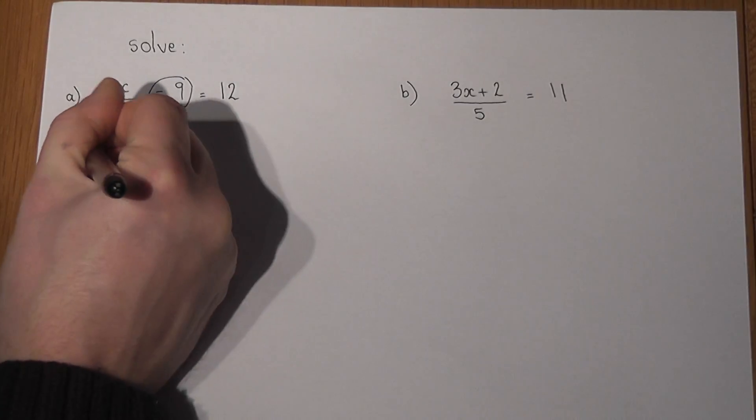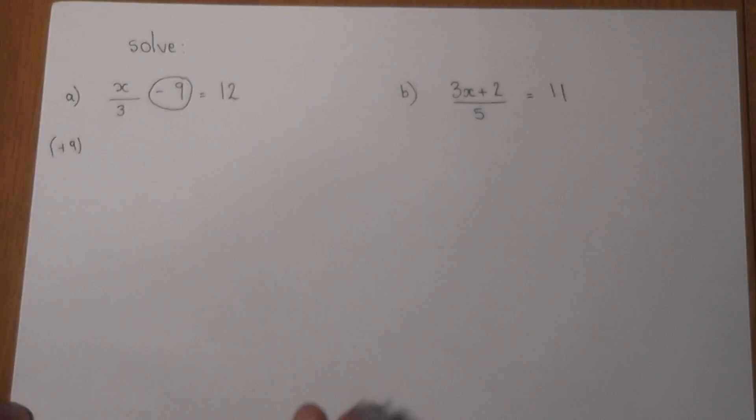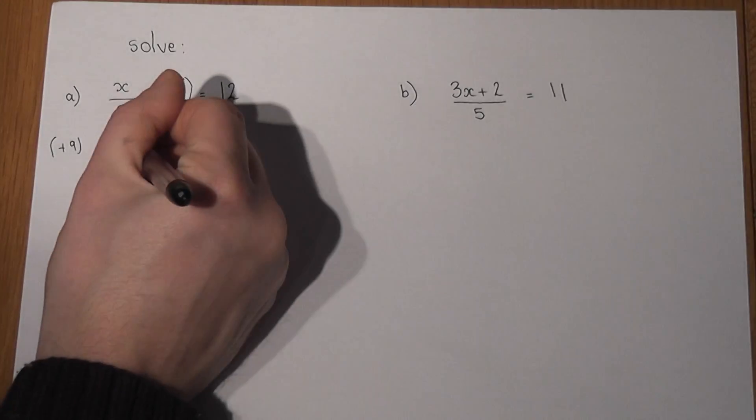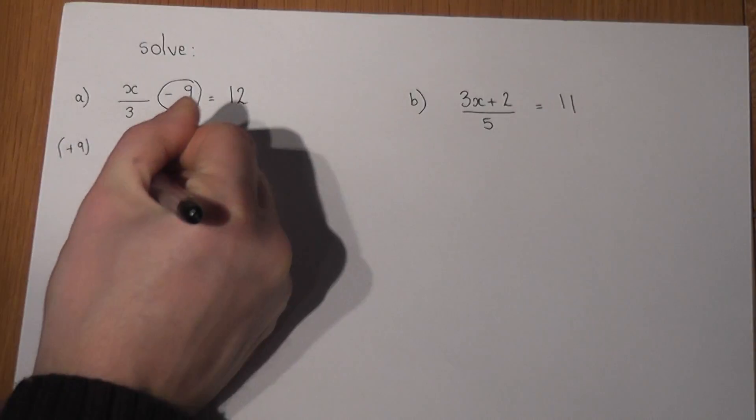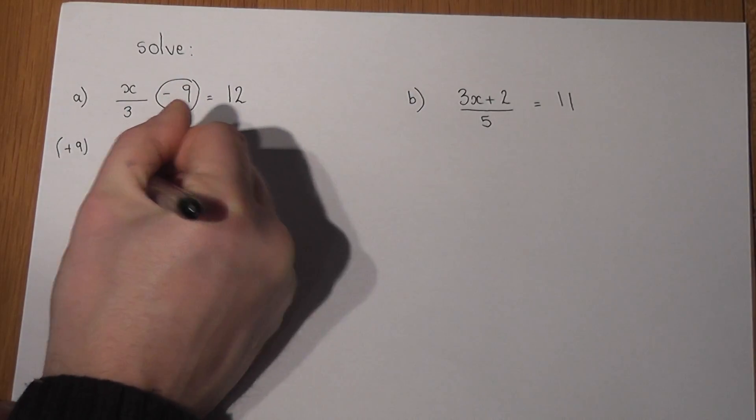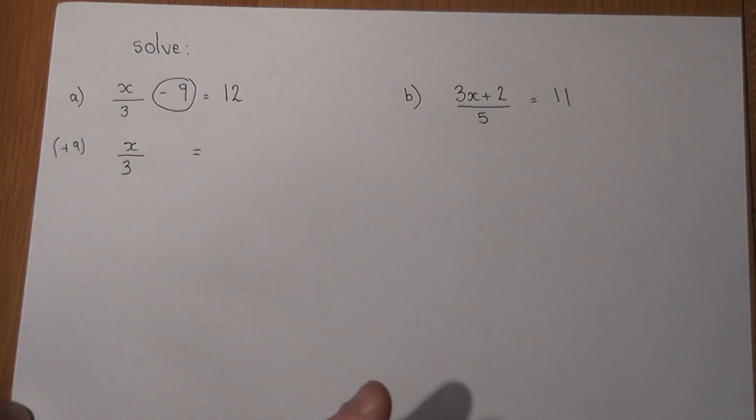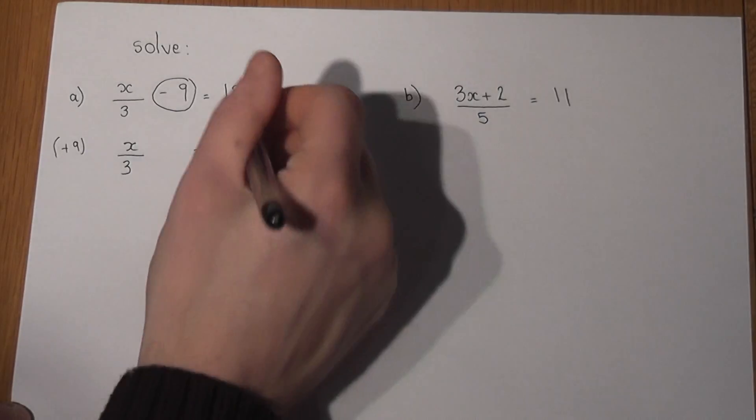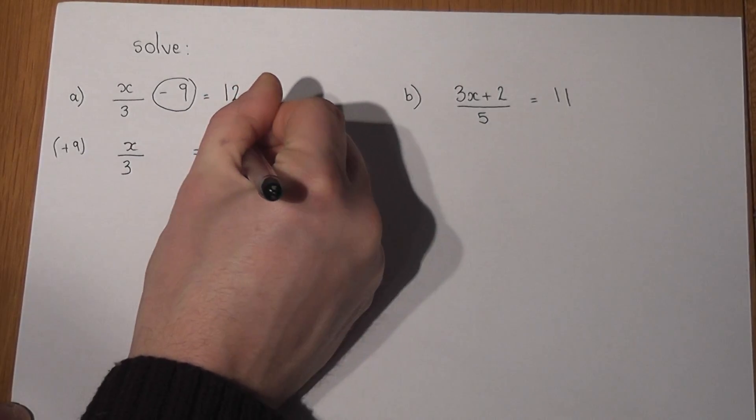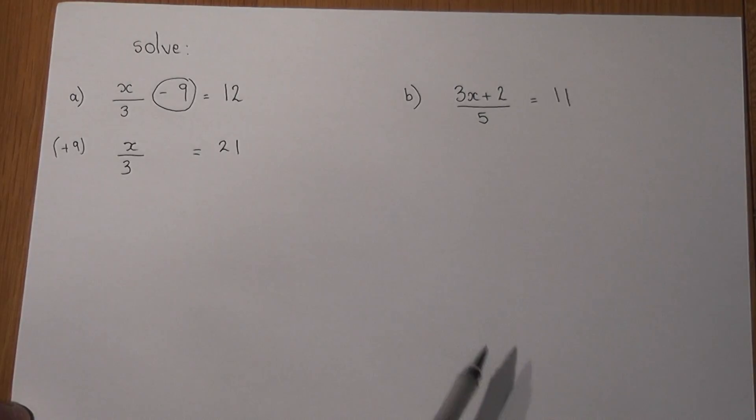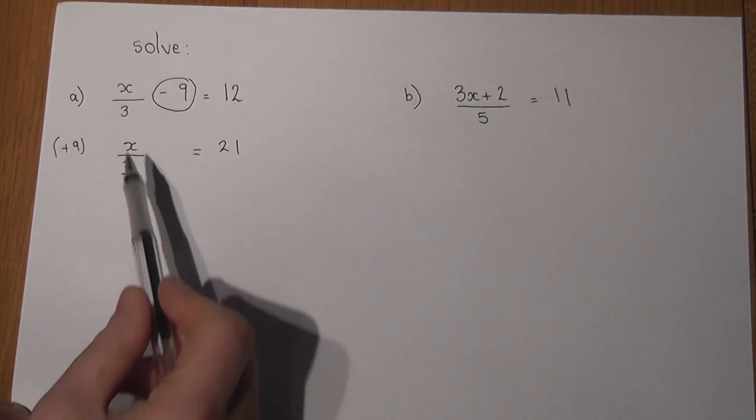...we're left with a fraction, in this case x over 3 equals, and because we added 9, 12 plus 9 equals 21. And this just leaves a fraction x over 3 equals 21.